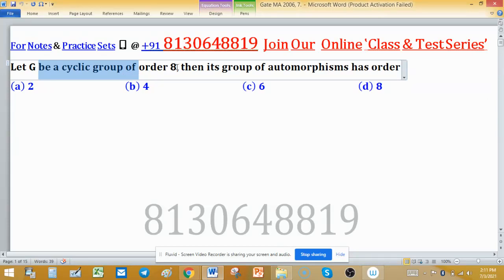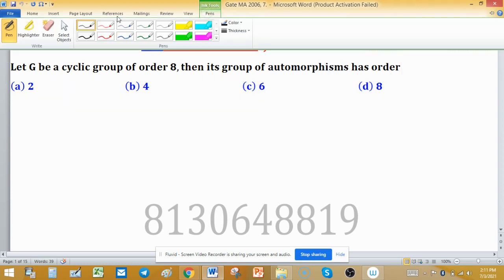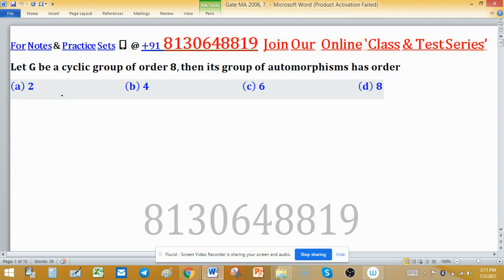A cyclic group of order 8, then its group of automorphism has order. This problem can be easily solved by a result related to cyclic groups of order n. Suppose G is a cyclic group and its order is n, then we can find order of its automorphism group by Phi n, where Phi is Euler's totient function.